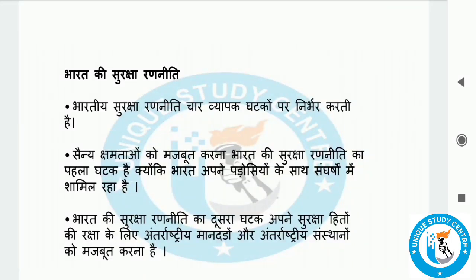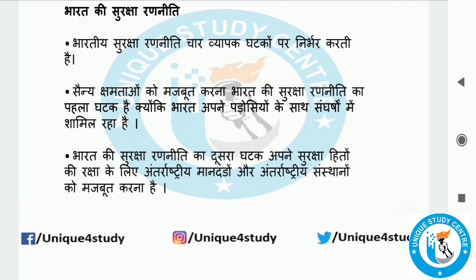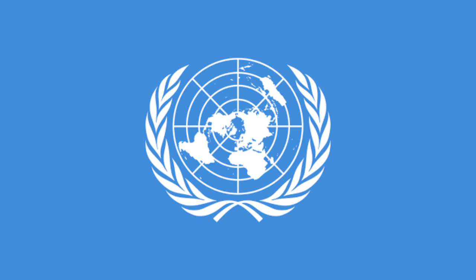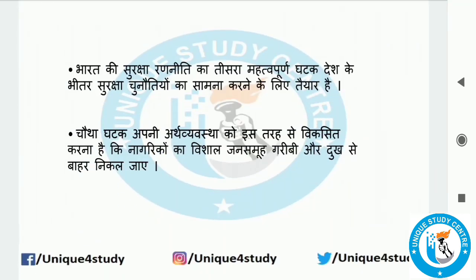What is the regulation of Bharat's Suraksha Ranneti (Security Strategy)? The structure of the Suraksha Ranneti has 4 vyaapak (broad) pillars, and the current objective is to improve the security of Bharat. The first rule of Suraksha Ranneti is being prepared for the next step, and the fourth step is to fix and remove threats from within and outside.